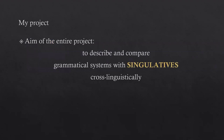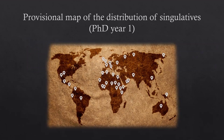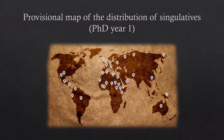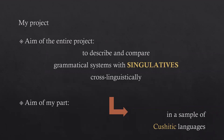My project is part of a bigger project which aims to describe and compare grammatical systems with singulatives cross-linguistically. My supervisor already started working on Welsh and Celtic, which was the first language family where she looked into singulatives. This provisional map from the beginning of my first year of PhD shows that singulatives are widespread — way more widespread than expected — appearing on all continents. My part specifically is to work on a sample of Cushitic languages.